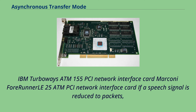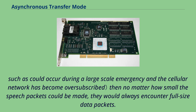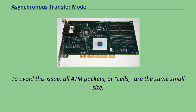If a speech signal is reduced to packets and forced to share a link with bursty data traffic — traffic with an abnormally large number of packets over a brief period of time, such as could occur during a large-scale emergency where the cellular network has become oversubscribed — then no matter how small the speech packets could be made, they would always encounter full-size data packets. Under normal queuing conditions, the cells might experience maximum queuing delays. To avoid this issue, all ATM packets, or cells, are the same small size.